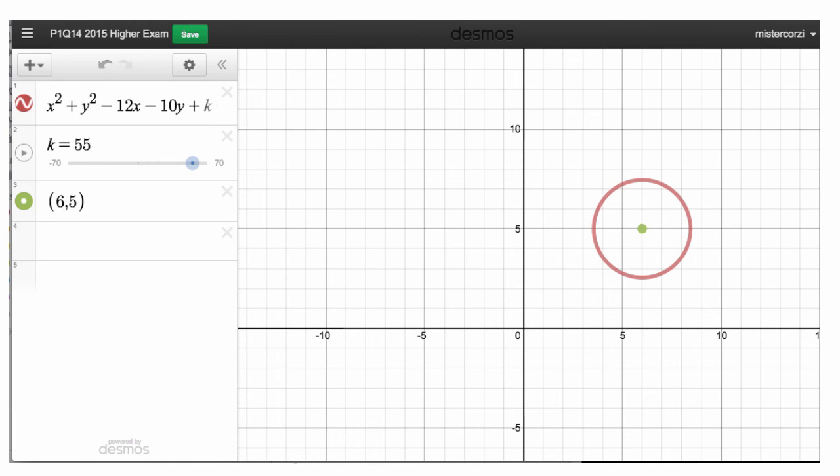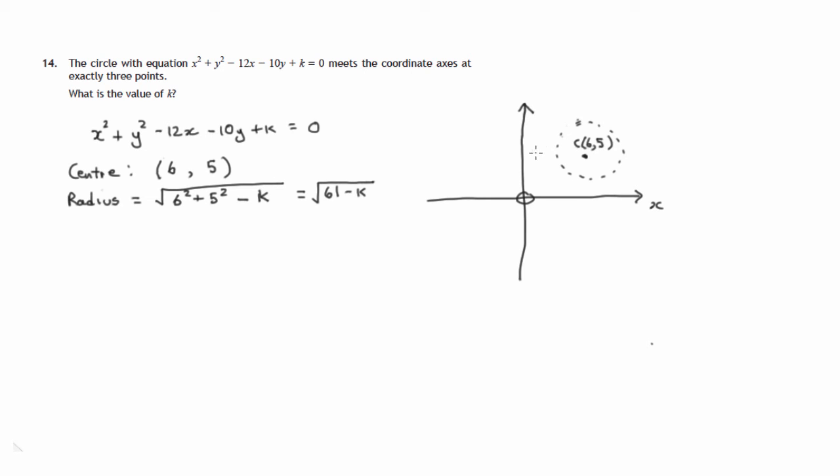So let's go back to our original diagram. So as you saw on the animation, the first time we get three points of intersection is when the circle is a tangent to the y-axis. And the other two points of intersection appear down on the x-axis. And we said that that radius is six. So when circle is tangent, tangential to the y-axis, radius equals six units, and there are three points of intersection.